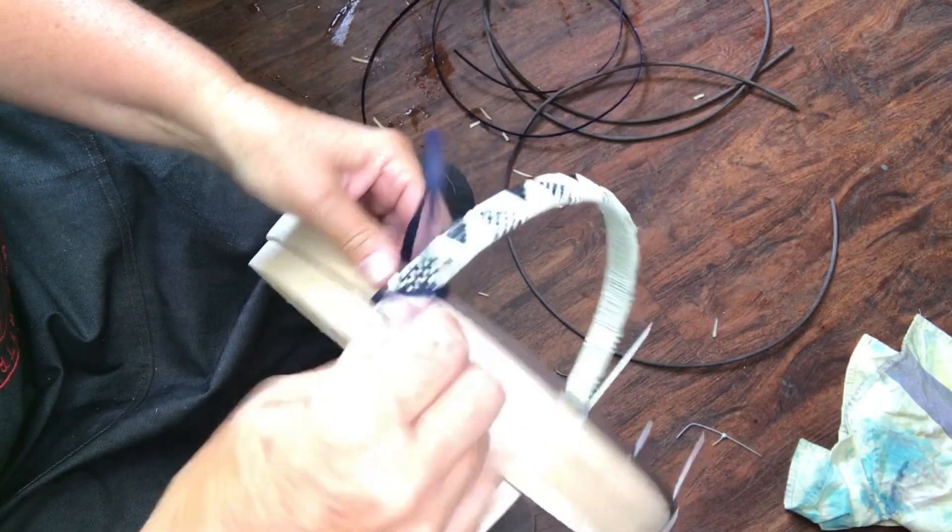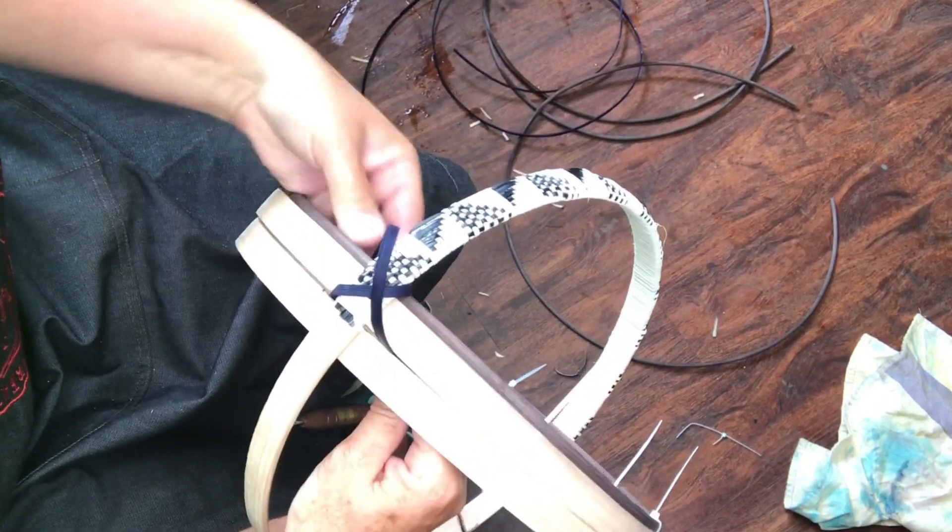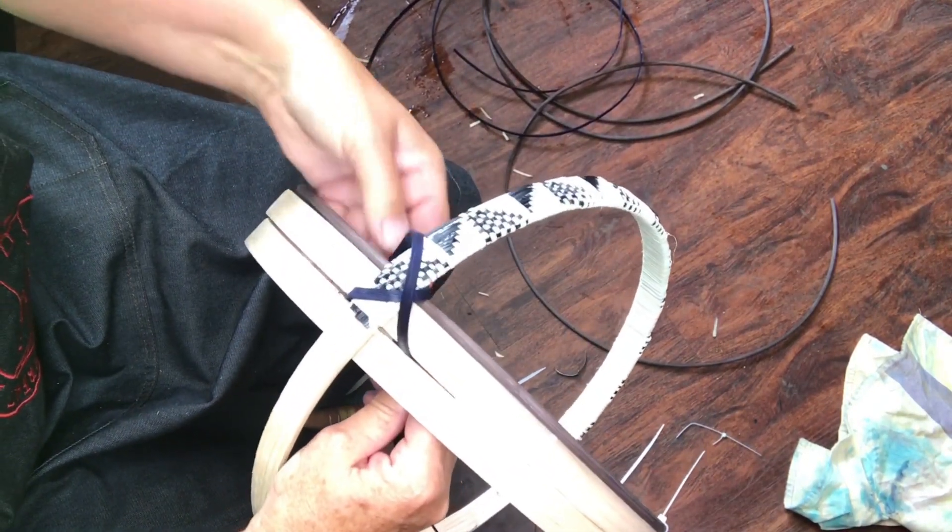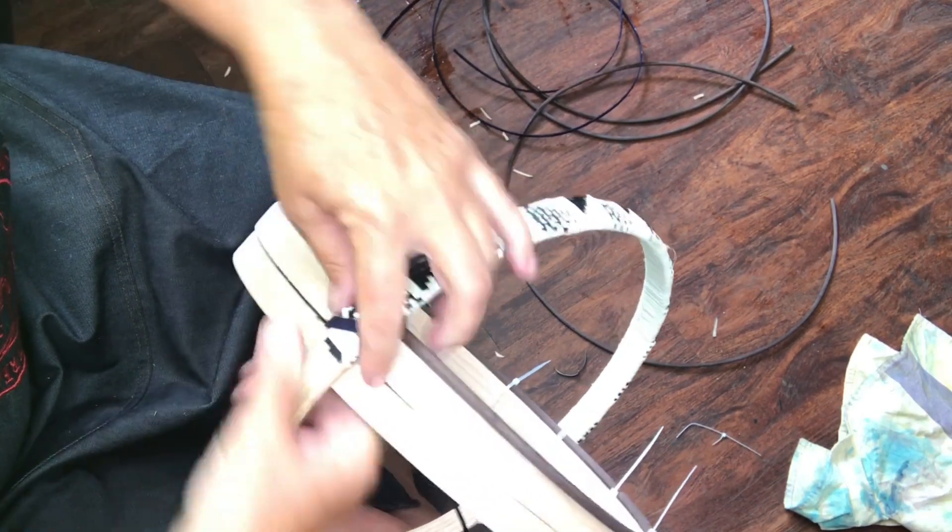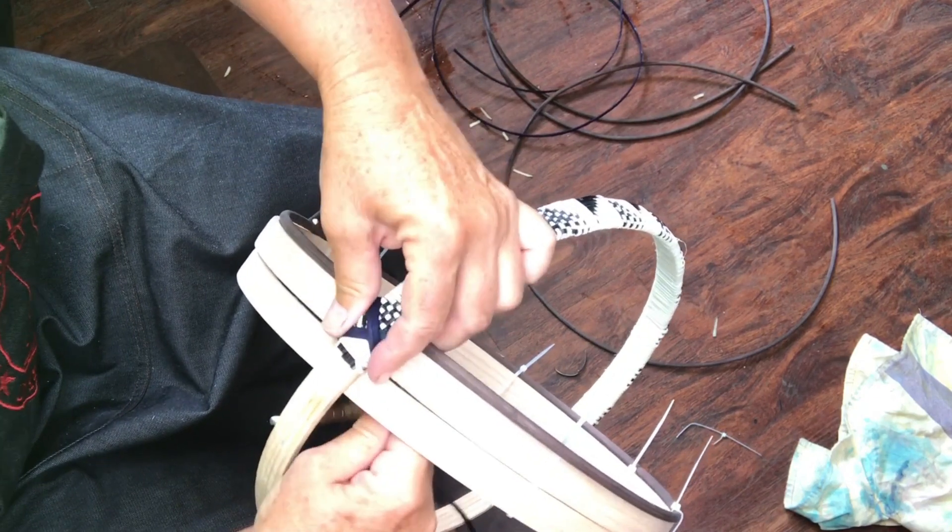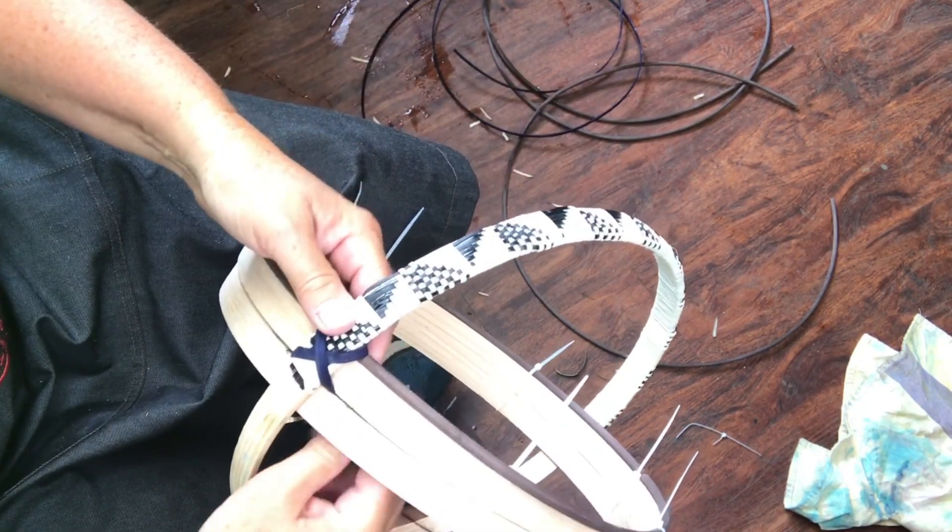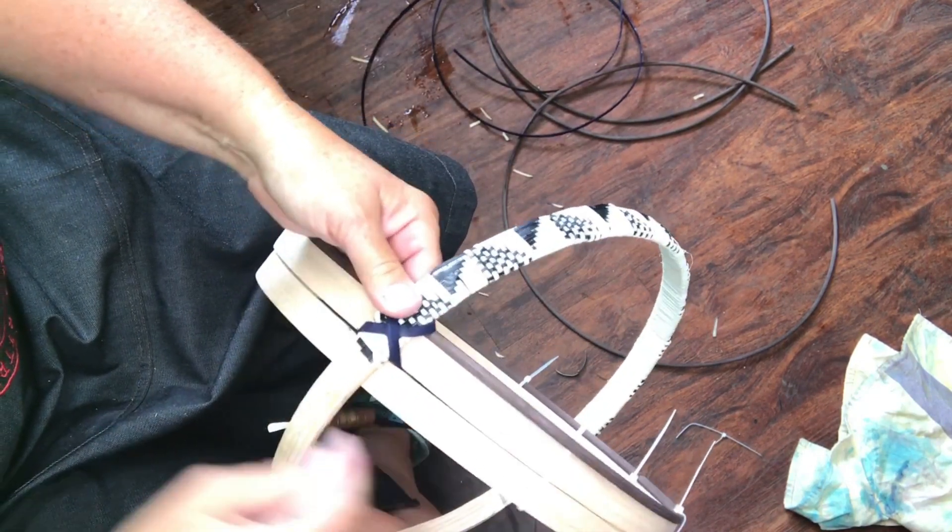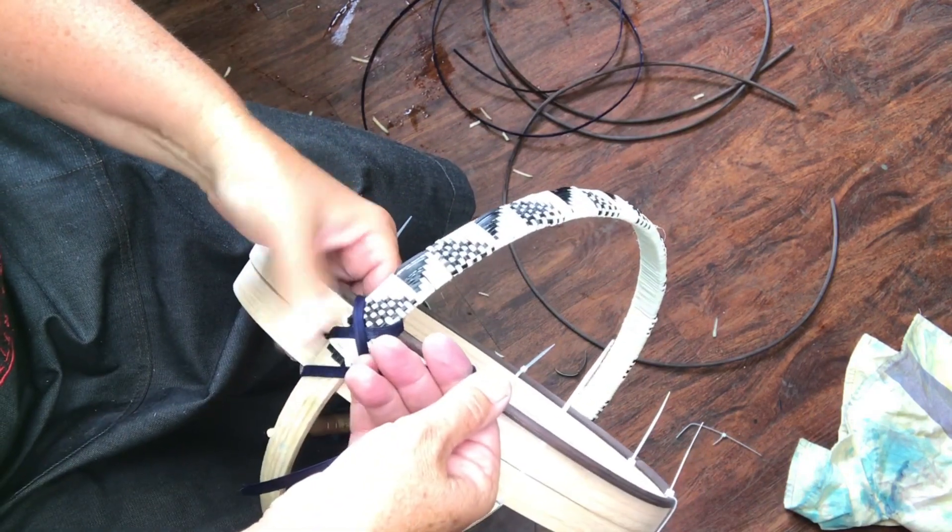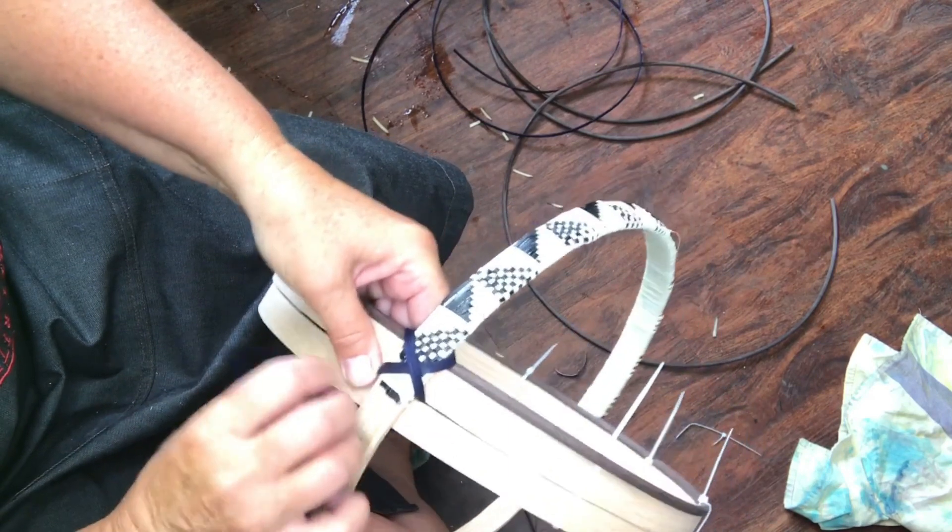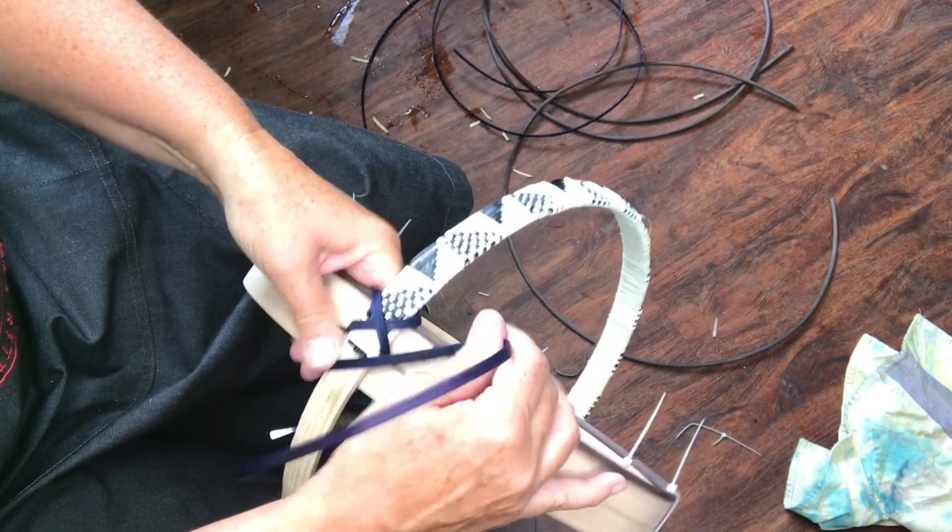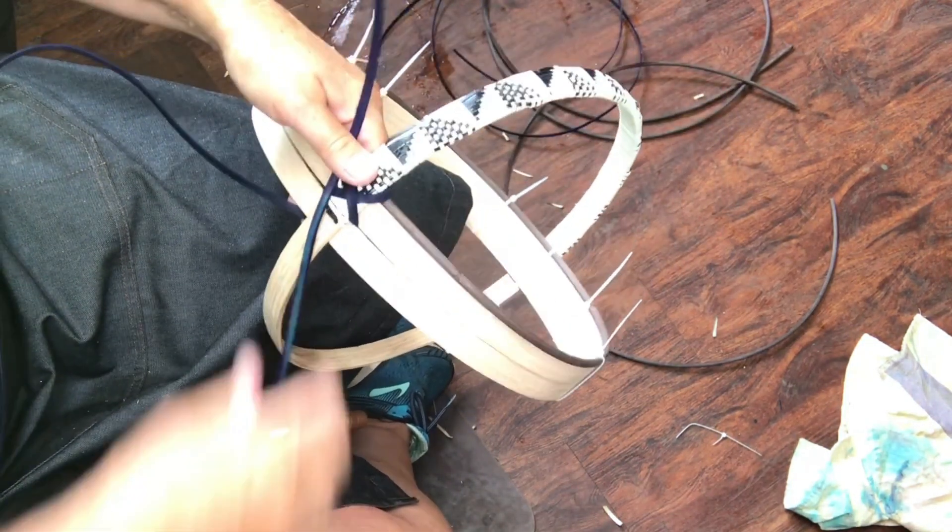Pull that through so you don't have a loop in it, hold that tight. Starting this off, because you're messing between these two hoops, you want to make sure that's good and tight. Then you're going to come diagonally across this one, across the back of the second rim, and come up to the inside - that's going to be the first part of your X here.